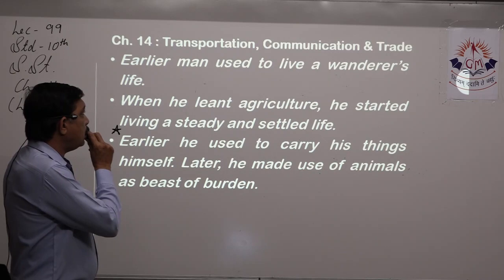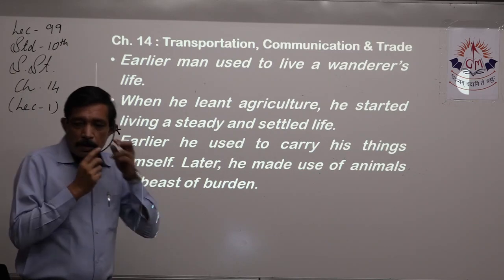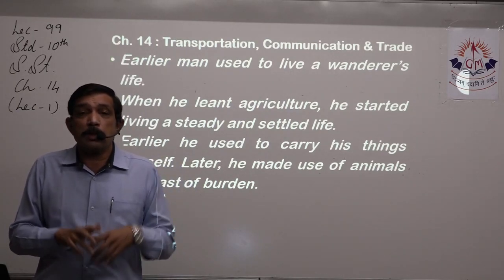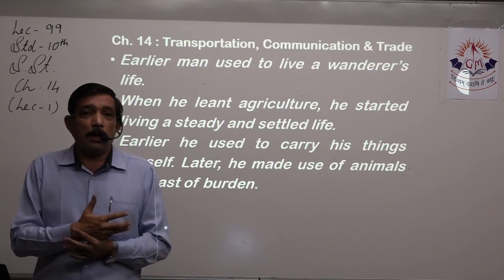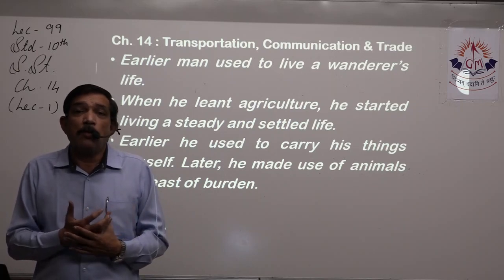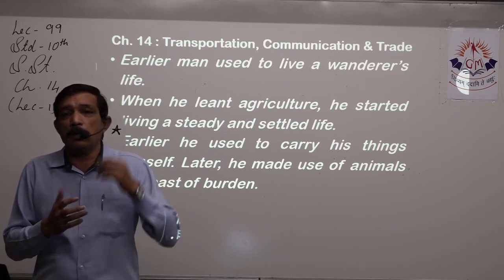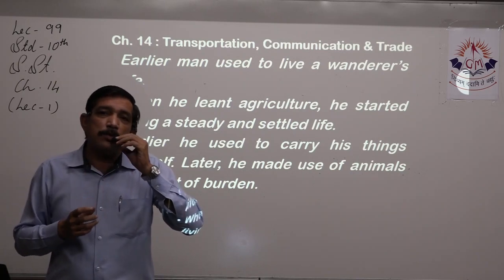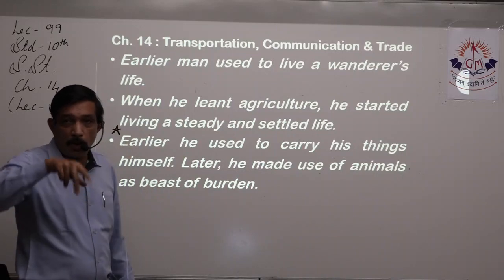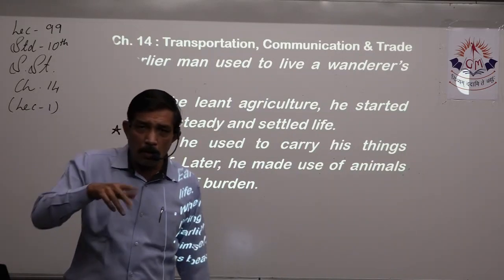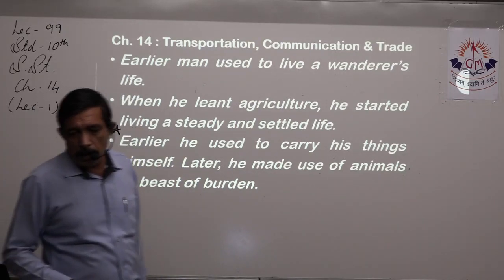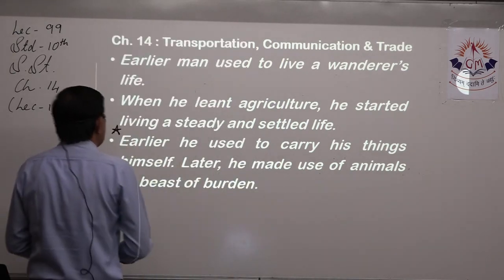Earlier, men used to live a wanderer's life as hunters and gatherers living in a primitive way — collecting food, killing animals for their hide for clothing and protection, and using the meat for food. Earlier men walked on foot; there was no need for any transport — you were your own transport. When he learned agriculture, then he started living a steady and settled life.